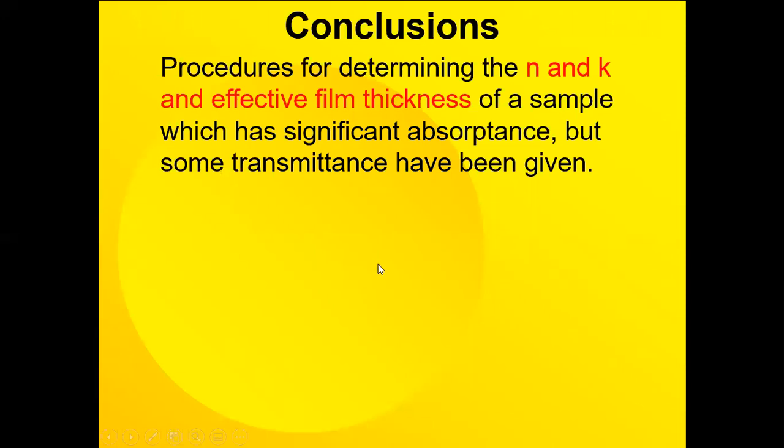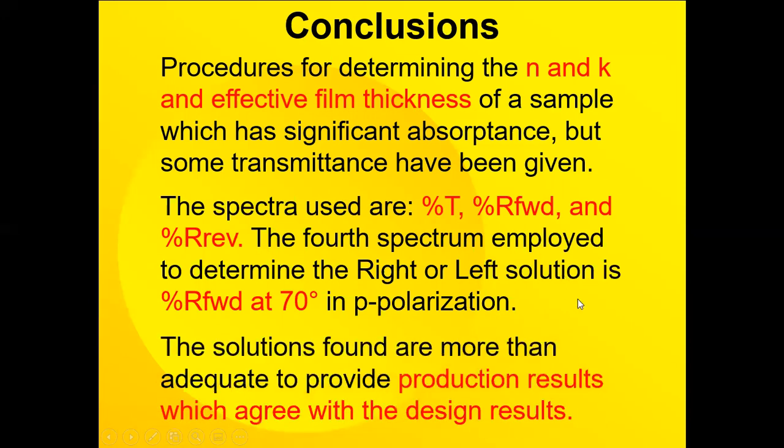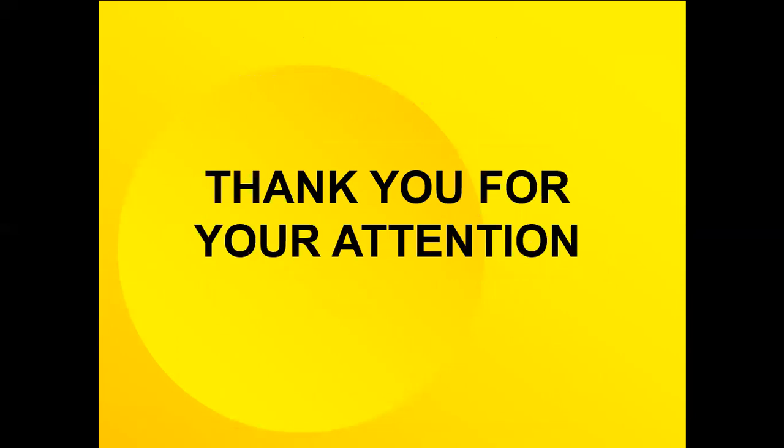So in conclusion, the procedures for determining the N and K and effective film thickness for a sample which has significant absorption but some transmission has been given. The spectra used are the percent T, percent R forward, and percent R reverse, which are fairly easily measured in any spectrophotometer. The fourth spectrum employed is to determine the right or left solution, which is correct. And the solutions found are more than adequate to provide production results which agree with design results. Thank you for your attention.